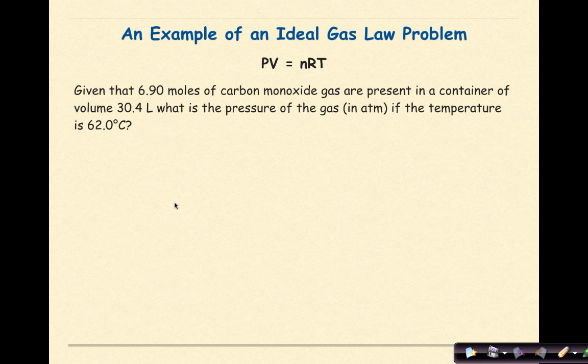Let's look at another example. Given that 6.9 moles of carbon monoxide gas are present in a container of volume 30.4 liters, what is the pressure of the gas in atmospheres if the temperature is 62 degrees Celsius? The first thing I'm going to do is write the ideal gas law: PV equals nRT.